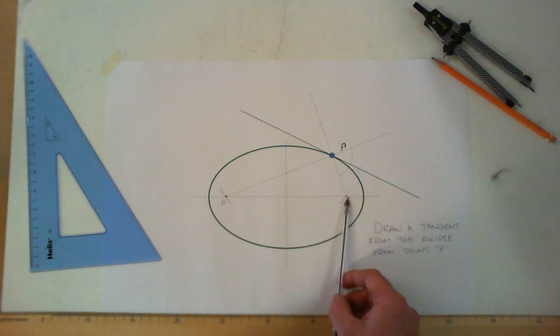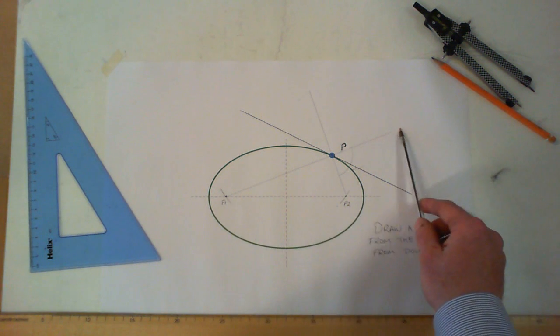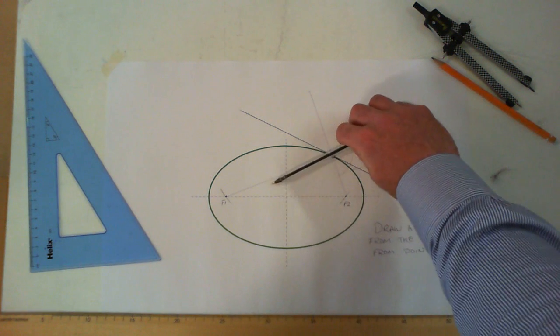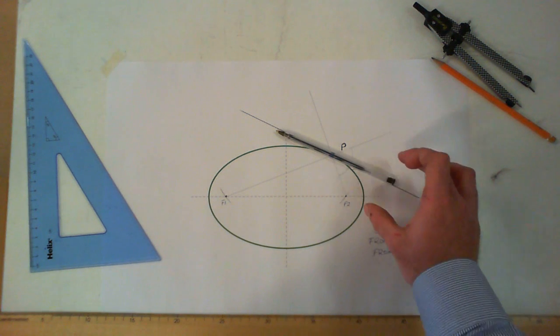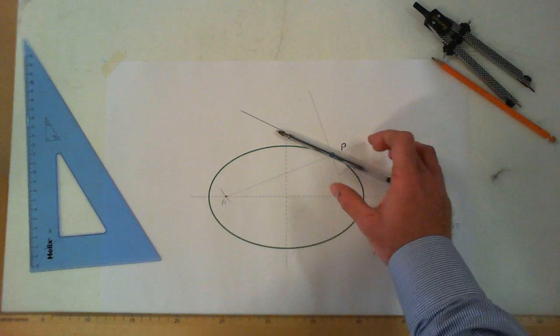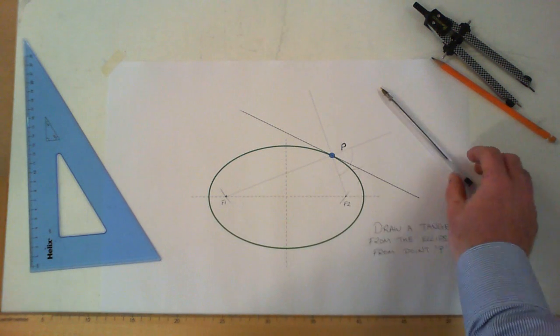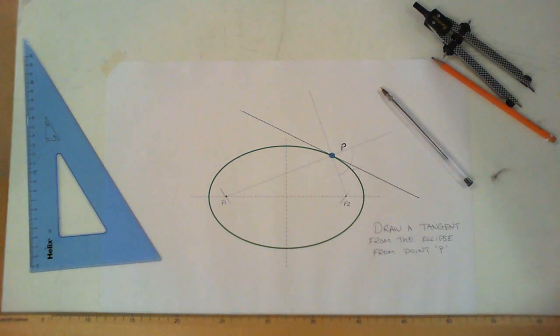Get your two focal points, join a line through focal point one through your point of contact, do the same for focal point two—that creates your X shape for you. Eye up the direction your tangent should be going in and bisect the angle through the X shape to give you that direction for your tangent. That will give you your tangent to your ellipse with point P given on the point of the curve.